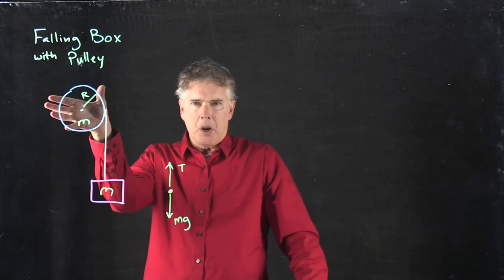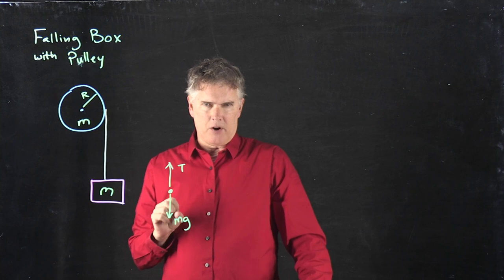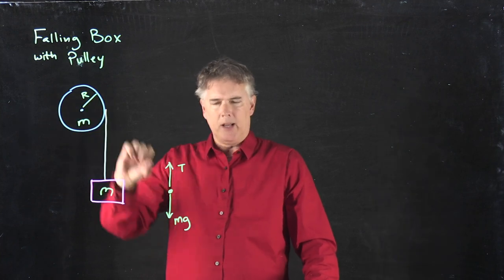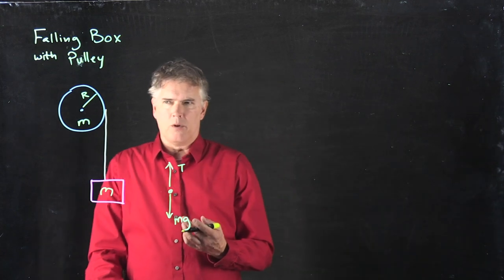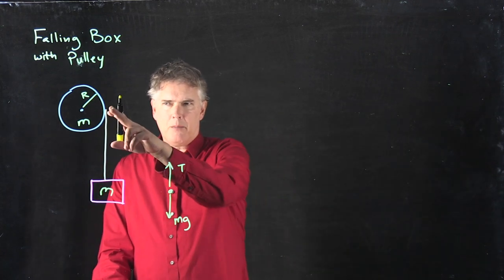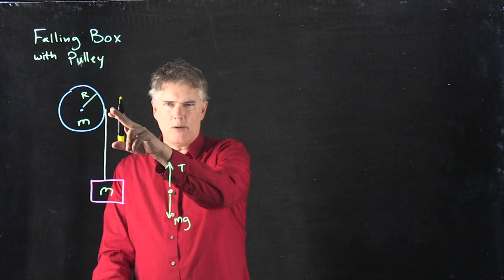Now, we know that the rope is going to pull on this disc and get it to start angularly accelerating. How do we deal with that? The way we deal with that is with torque. So if I think about the torque right here on the wheel,